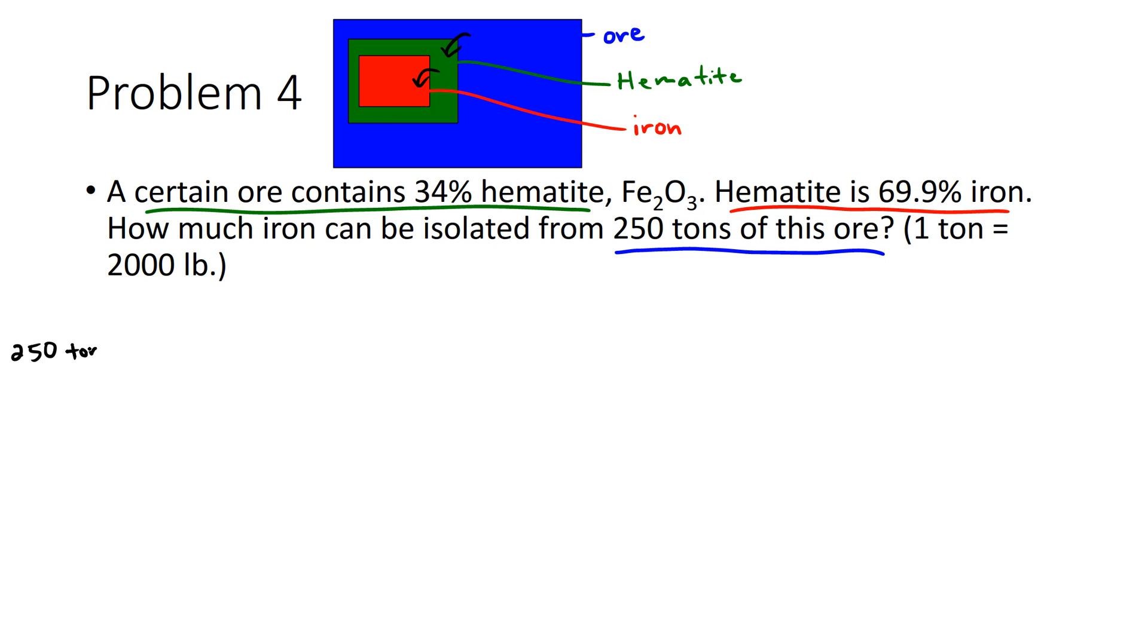So we'll start with the information that's given, which is 250 tons of the ore, and we know that the ore contains 34% hematite.